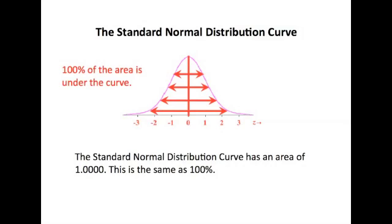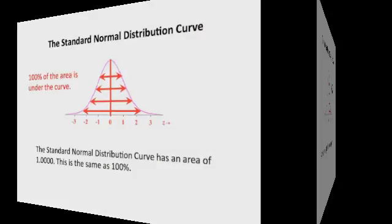This is the same as 100%. In other words, underneath this curve, there is one full unit of area. Half of it lies to the right of the mean, which is above the mean. Half of it lies to the left, which is below the mean. 50% to the right of the mean, 50% to the left of the mean.